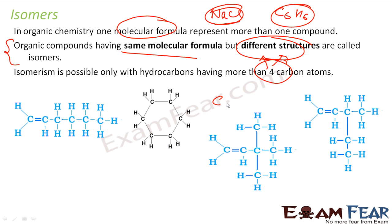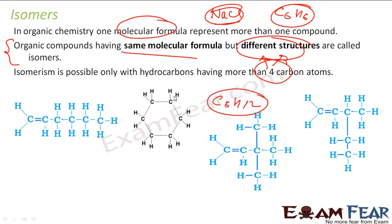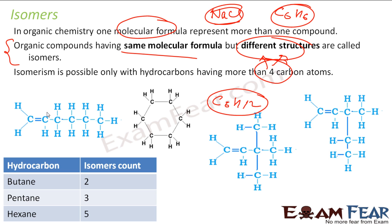For example, all the structures shown here are C6H12. Each and every structure you see has the same molecular formula C6H12, but they have different structures, and they all have different properties.